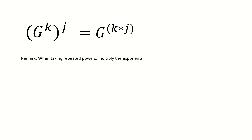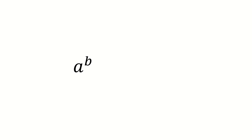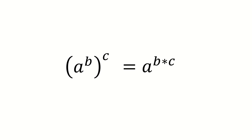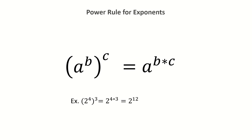This is like how if we have a number a and take its bth power, and then take its cth power, we get the number a to the b times cth power. This is called the power rule for exponents.